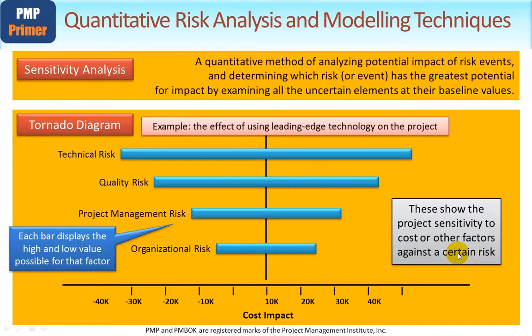Coming back to risk, what we'd want to do is choose an example. So let's assume you want to look at the sensitivity of using leading edge technology on the project in terms of cost. You'd want to arrange the different aspects or elements that would have some sensitivity to whether or not you're employing leading edge technology — in terms of risks, of course. And here we've got technical risk, quality risk, project management risk, organizational risk, and so on — just examples.